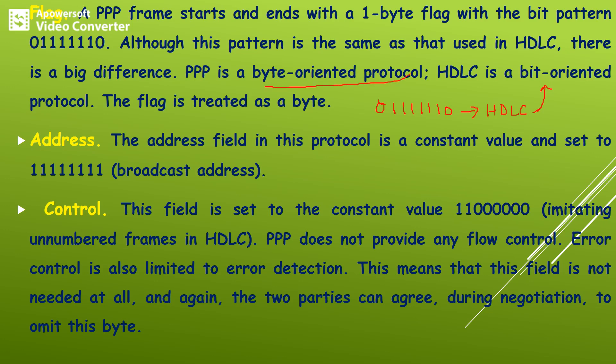The next field is the address field. This address field is one byte and the value is the broadcast address with all ones. The next field is the control field, which is again one byte. The value of the control field will be equal to one one followed by six zeros. PPP does not provide flow control or error control — error control is limited to error detection only. Therefore, during negotiation, both parties can agree to discard this respective byte.